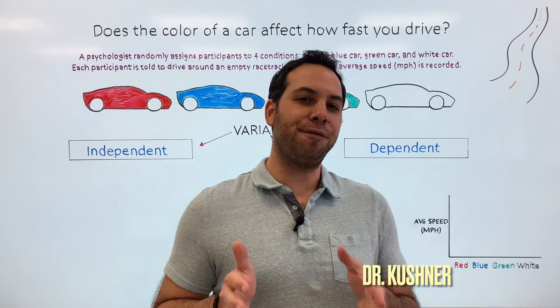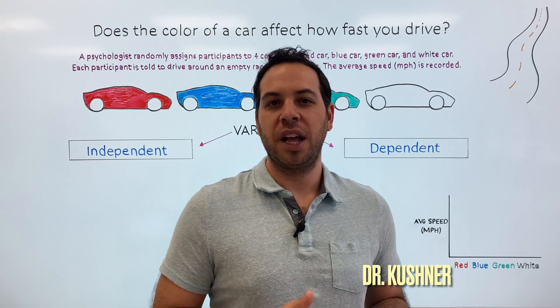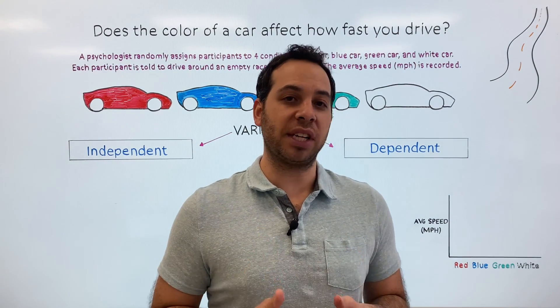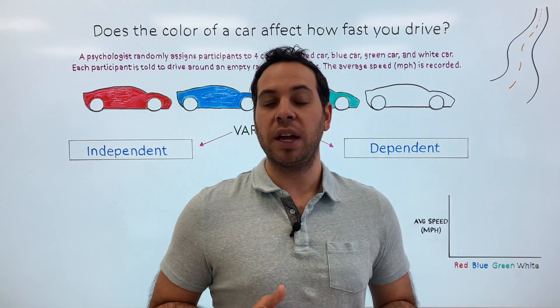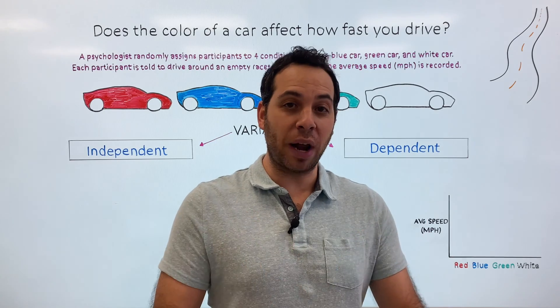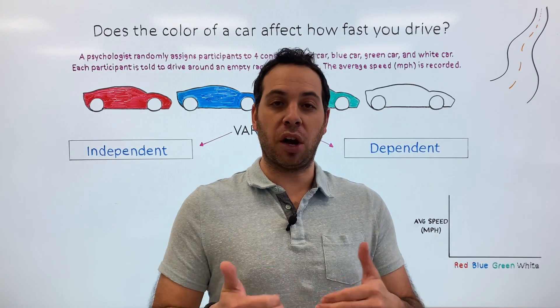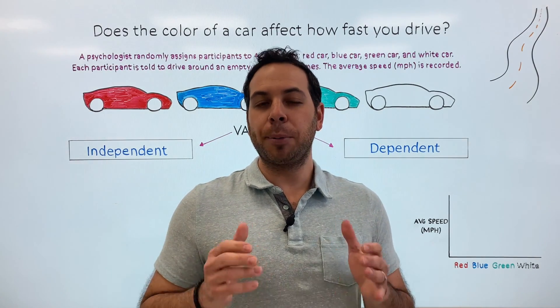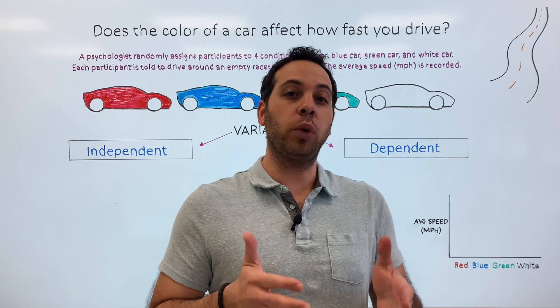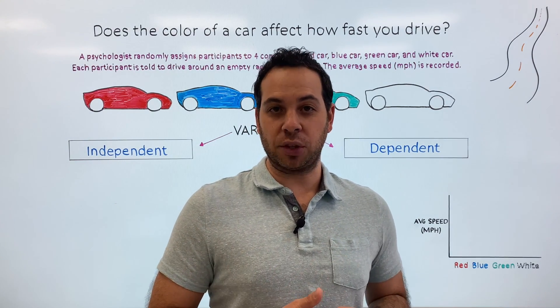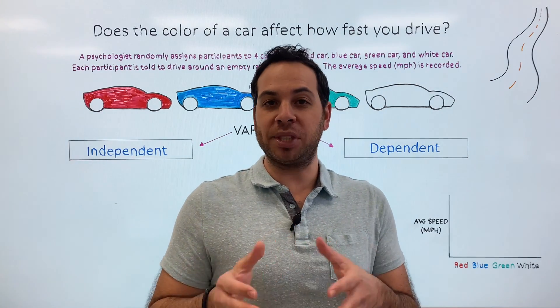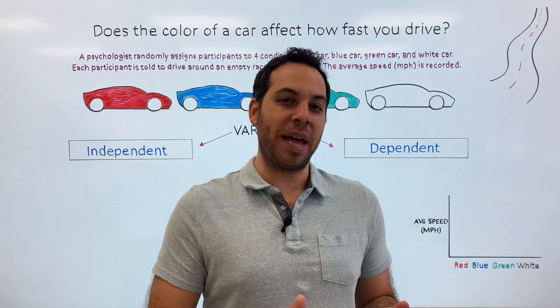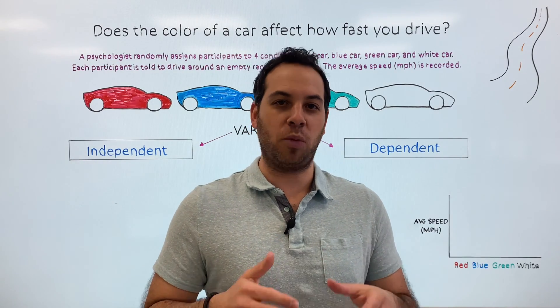Does the color of a car affect how fast you drive? A psychologist might hypothesize that participants given a red car as opposed to a blue or green car may drive faster because seeing red can increase your heart rate and cause an adrenaline rush. But the purpose of this video is not to argue whether color would or would not cause somebody to drive faster, but rather to understand and break down the variables that make up a study, specifically the independent and dependent variables. So let's dive in.